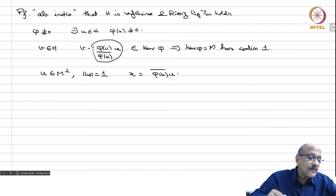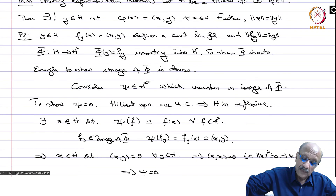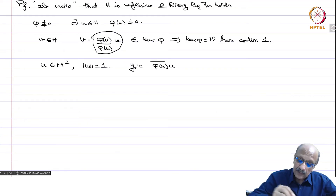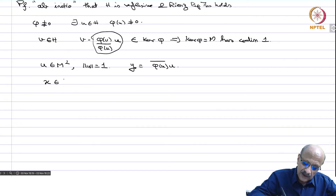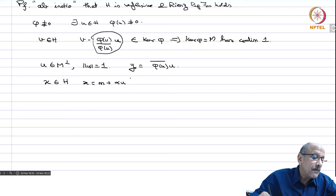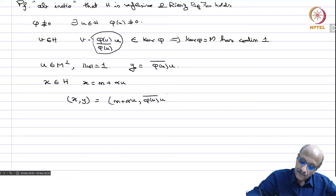Now for any x in H, x can be written as m + alpha*u where m is in M (the kernel) and alpha is a scalar. Consider the inner product x,y = inner product (m + alpha*u), (phi(u)-bar * u). Since m is in M and u is in M-perp, they are orthogonal, so that term vanishes. We get alpha times phi(u)-bar times inner product u,u, which equals alpha times phi(u).